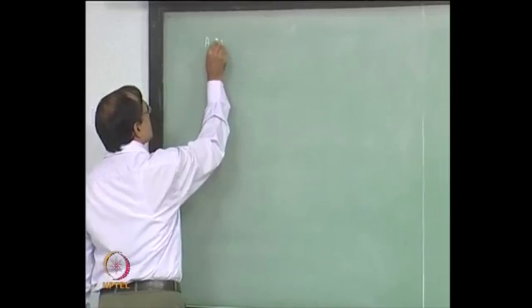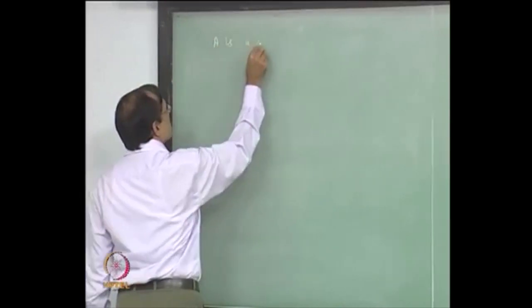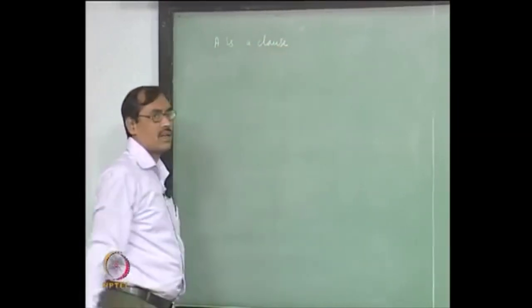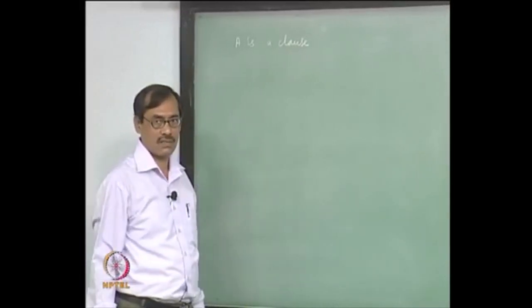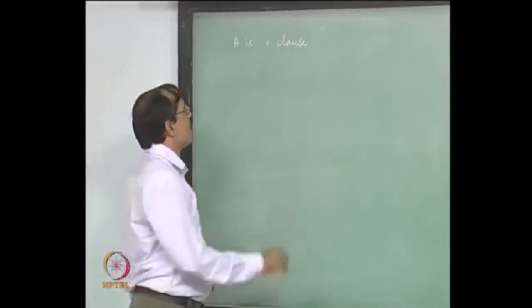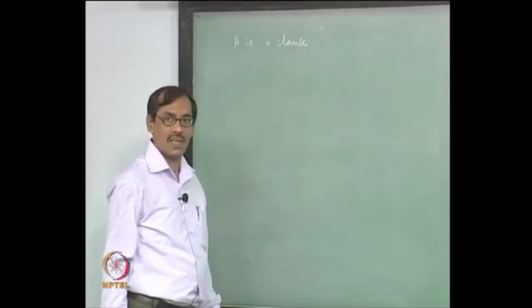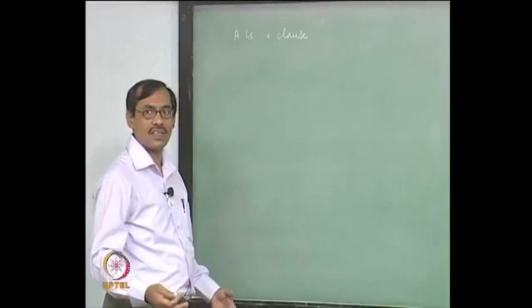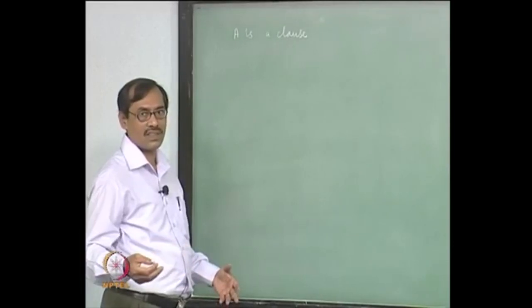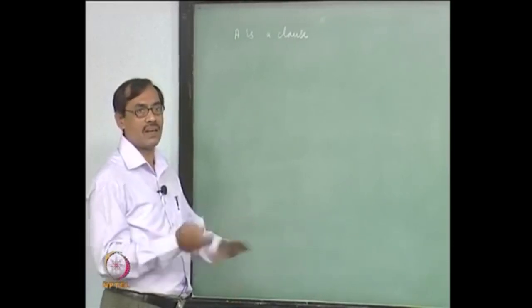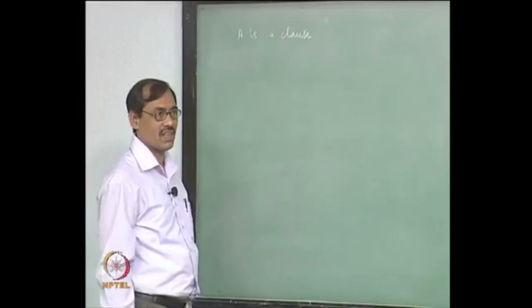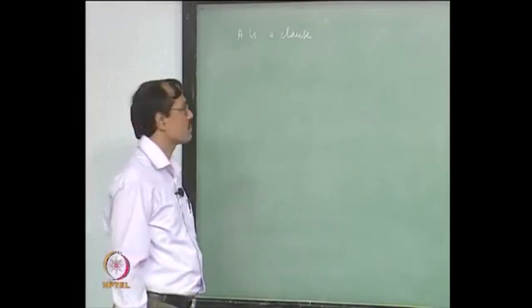Say A is a clause. Once we say clause, it means it is a disjunctive clause in this scenario. It is also written as a set. We can write clauses as OR of literals. Any time we can think of this as a set of literals — we will not write them explicitly, and either notation we will be using.